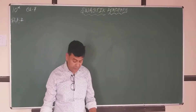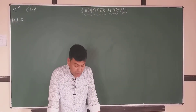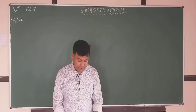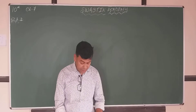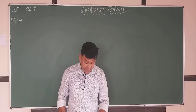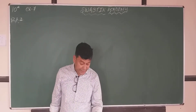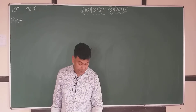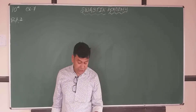Let's start question number 3. To conduct the school's day activity in your rectangular shaped school ground, lines A, B, C, D have been drawn with chalk powder at a distance of 1 meter each.